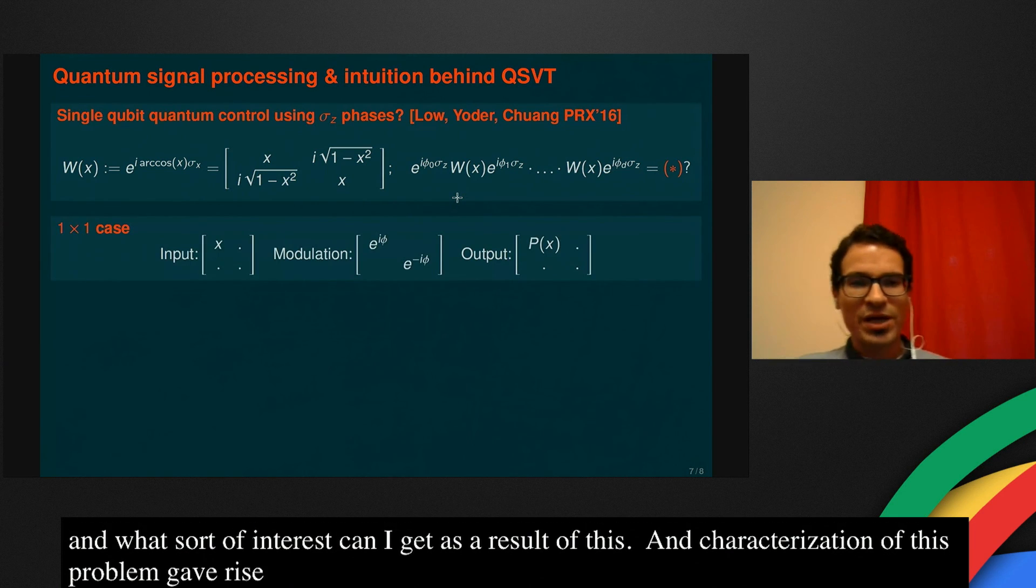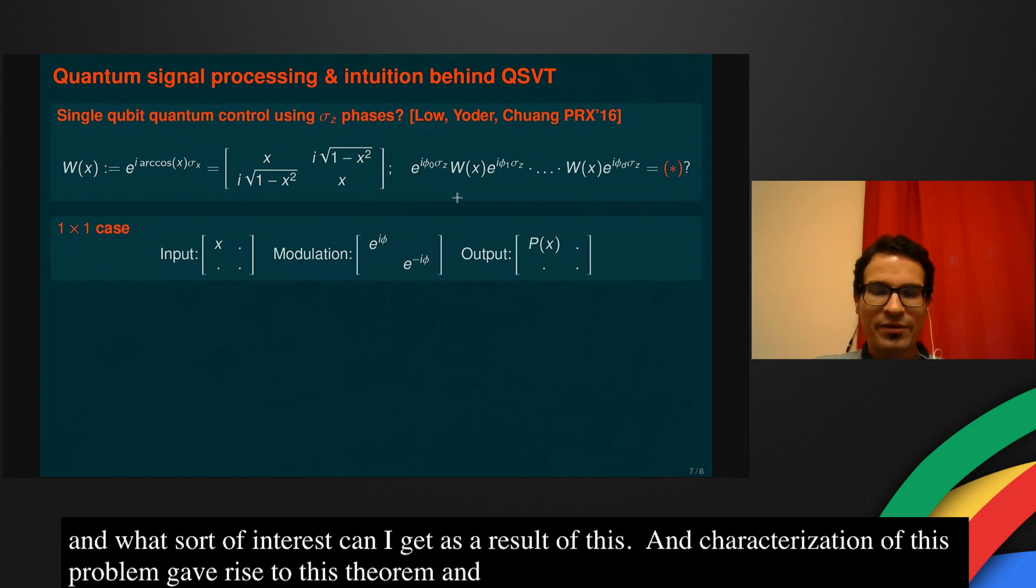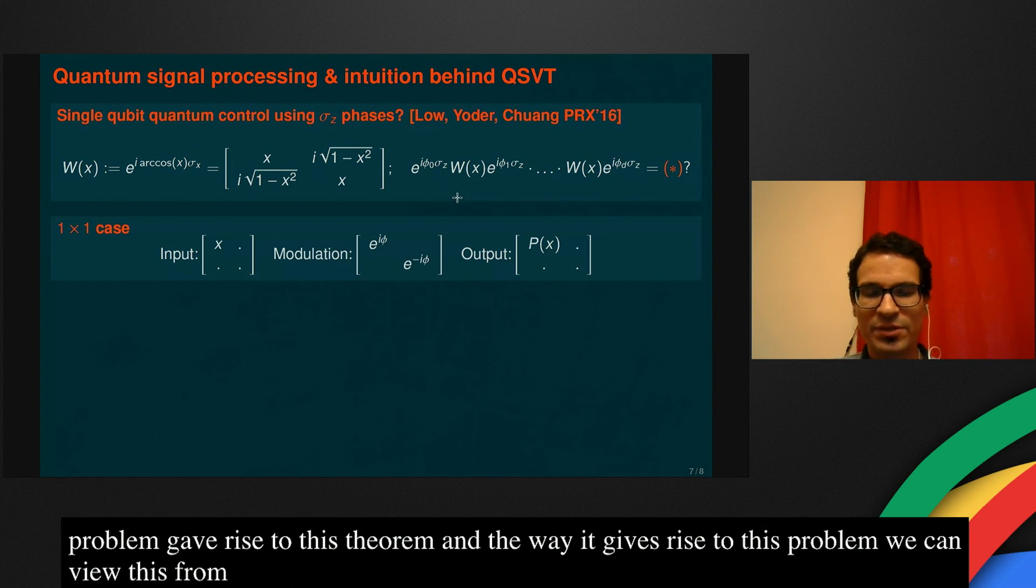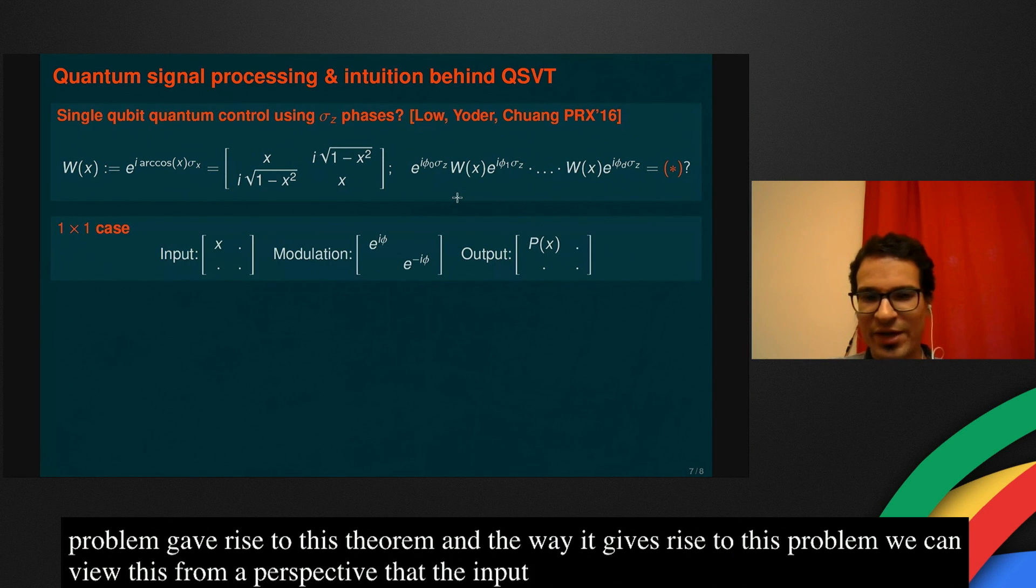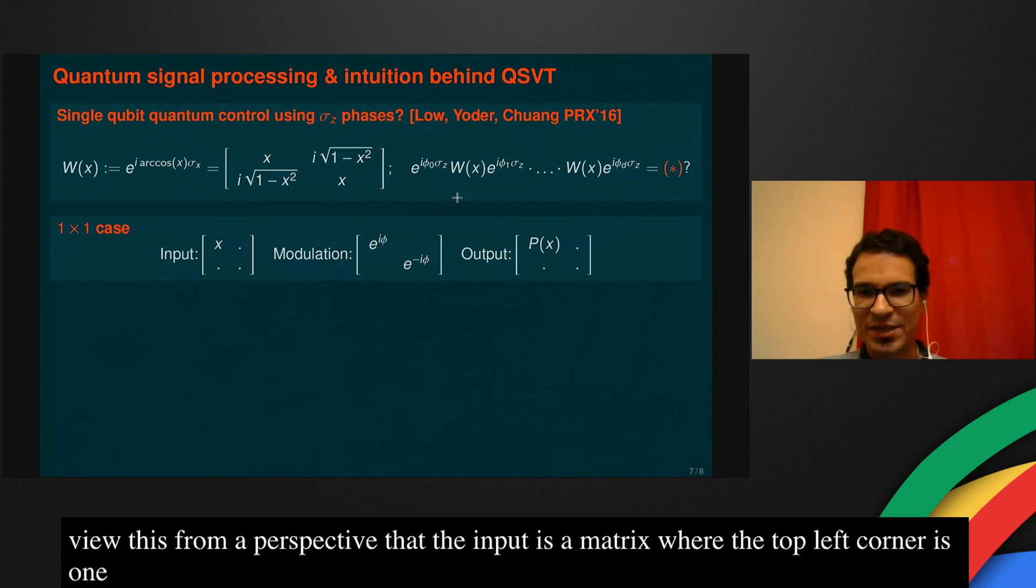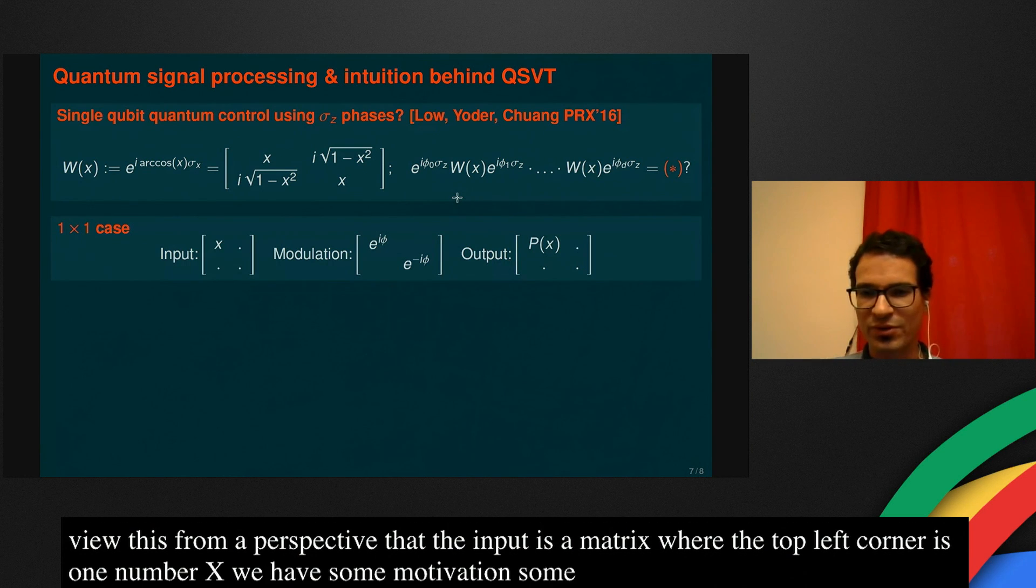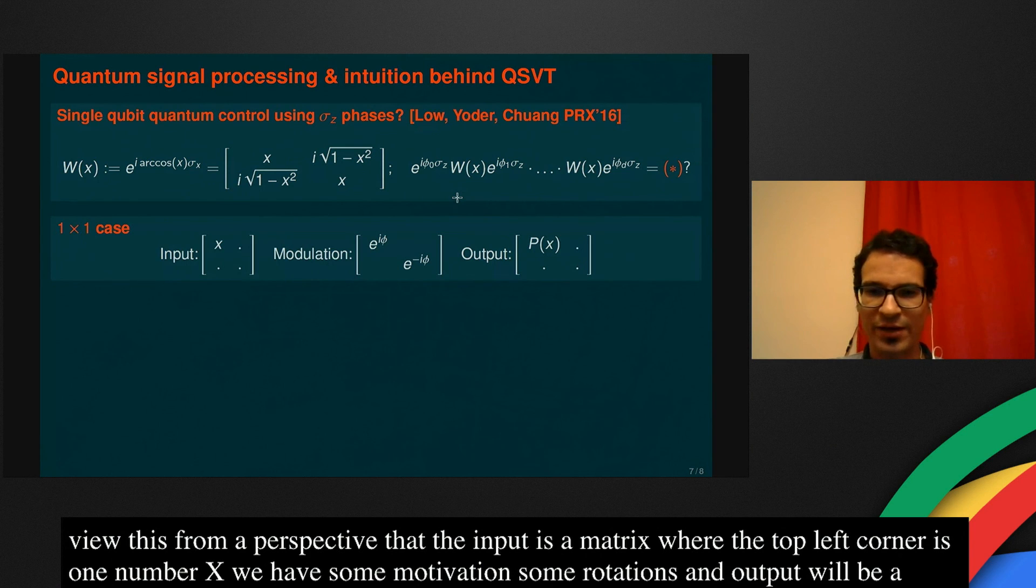A characterization of this problem gave rise to this theorem that I described. And the way it gives rise to this problem is that we can view this from, again, a bird's eye perspective, that the input is a matrix where the top left corner is just a one by one by one matrix, number X. We have some modulations, some Z rotations, and the output will be a new quantum circuit where the top left corner is just P of X.